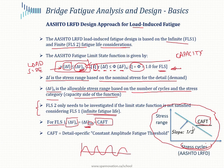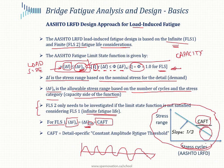Below the constant amplitude fatigue threshold, the number of cycles doesn't come into play — you can keep loading the detail and it will never experience a fatigue failure. So the number of stress cycles is not needed for infinite fatigue life, which applies when your stress is smaller than the CAFT. In some codes this is called the CAFL — constant amplitude fatigue limit. This is a detail-specific limit.